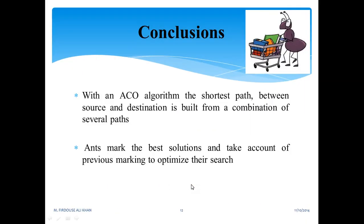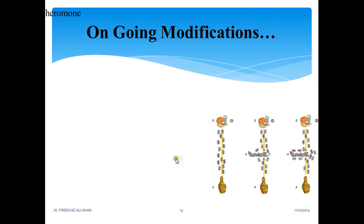Now coming to conclusion, with an ACO algorithm, the shortest path between source and destination is built from a combination of several paths and marks the best solution, taking into account previous markings to optimize the search. Inspiration from nature, but with smarter agents. Ants are smarter than expected.